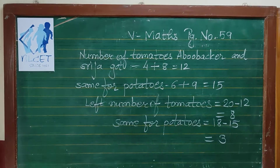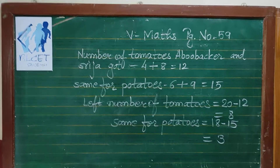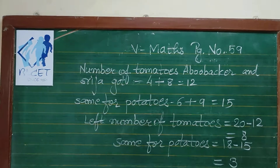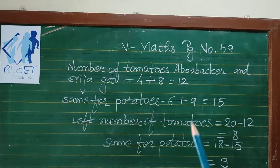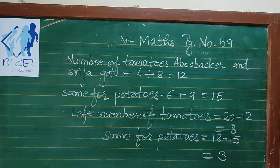Number of tomatoes: Abu Bakr and Sreeja got 4 plus 8 is equal to 12. Same for potatoes, 6 plus 9 is equal to 15.